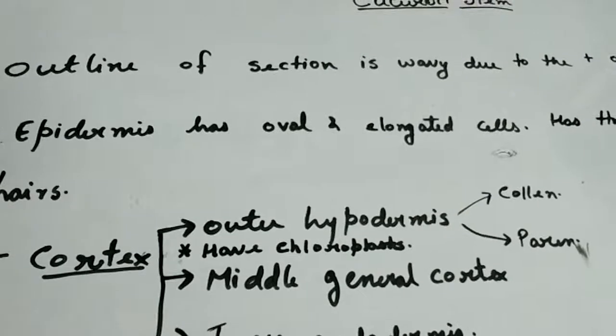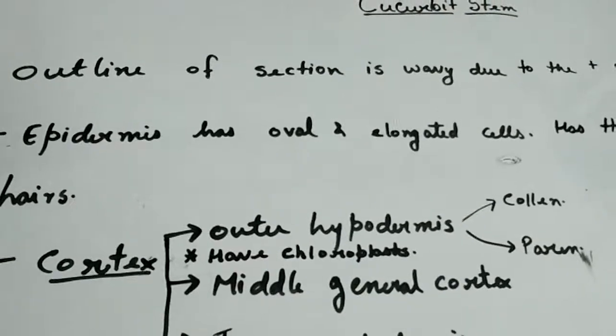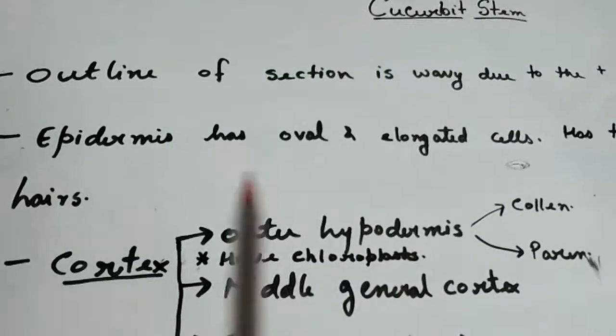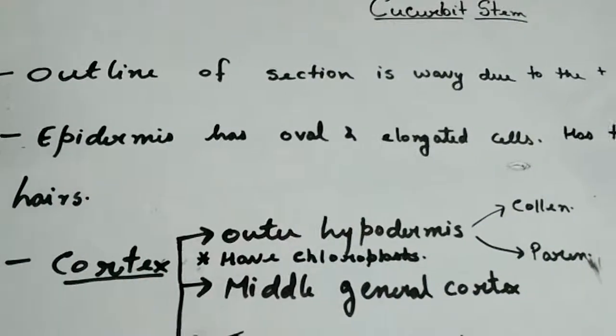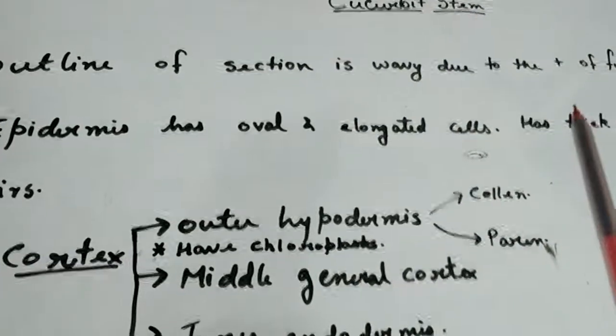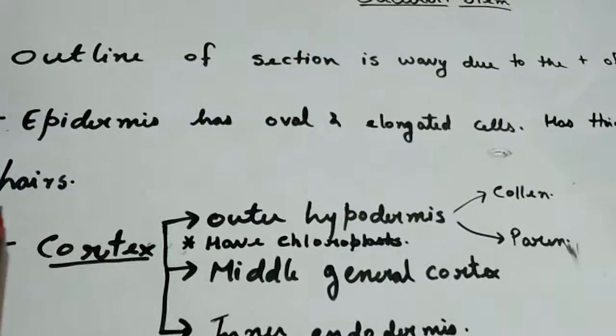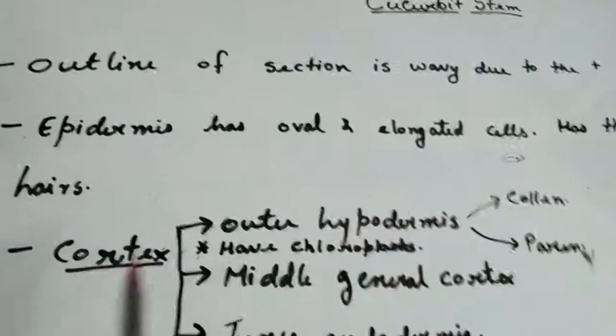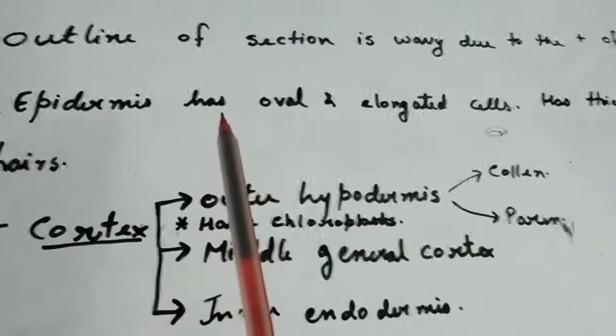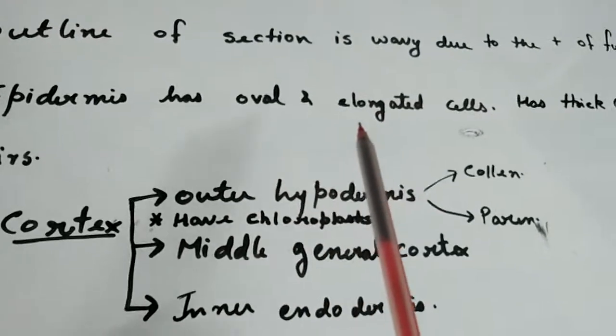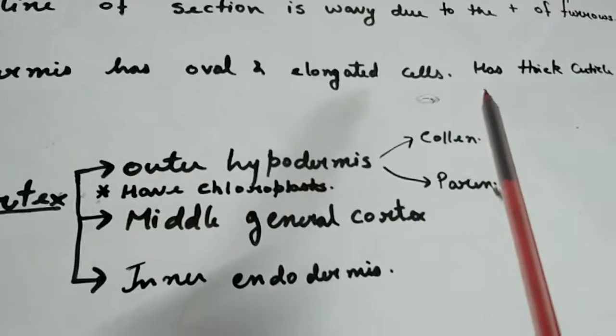These wavy lines are very prominent, so it's a very characteristic feature about cucurbita stem. The epidermis has oval and elongated cells, and thick cuticle is present. It has multicellular hairs.